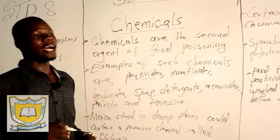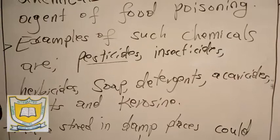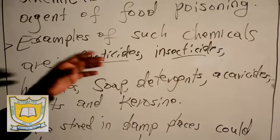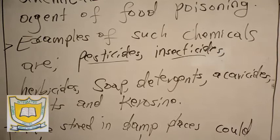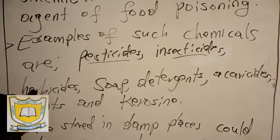Examples of such chemicals are: number one, pesticides — when they are mishandled they can cause food poisoning. Number two, insecticides, which are chemicals that control insects as well, and when they come in contact with food the food is poisoned. Number three, we have herbicides.